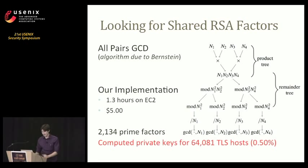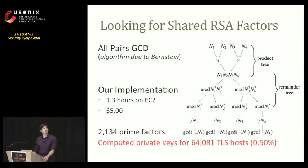So pairwise comparison is out. However, we implemented an algorithm previously published by Dan Bernstein. We effectively create a product tree of all the moduli we find, then divide out with a remainder tree. Using this implementation, we can compute the pairwise GCD of all keys in our dataset in under two hours on EC2 for a total cost of $5.